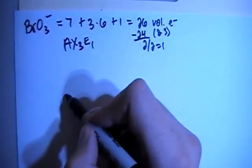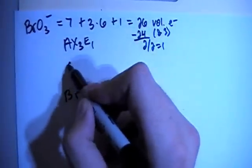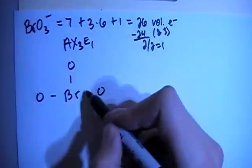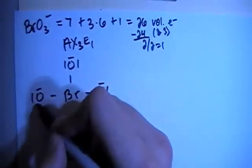So let's go ahead and start to draw this. We have the bromine in the center, surrounded by 3 oxygens, 1, 2, 3. Let's go ahead and single bond all of those and fill out their octets.